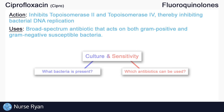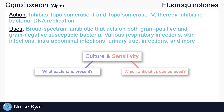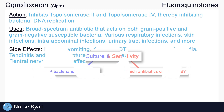Ciprofloxacin can be used in various respiratory infections, skin infections, intra-abdominal infections, urinary tract infections, and more. It is most often ordered orally or intravenously, but it is also available as an ophthalmic solution for various eye infections, including bacterial conjunctivitis.